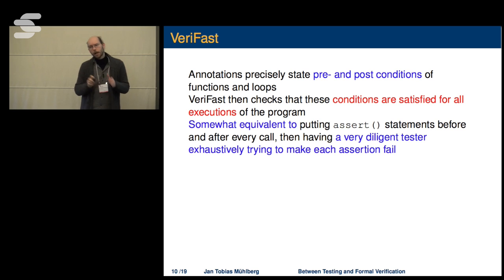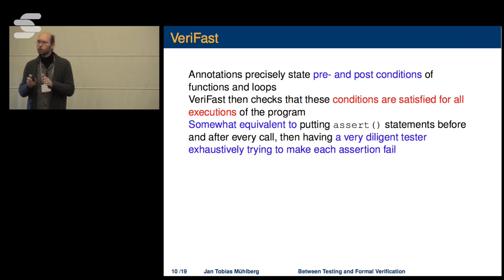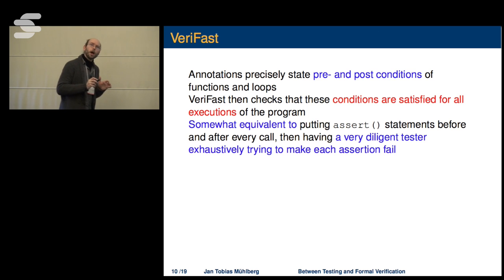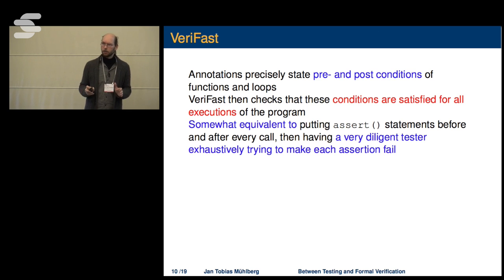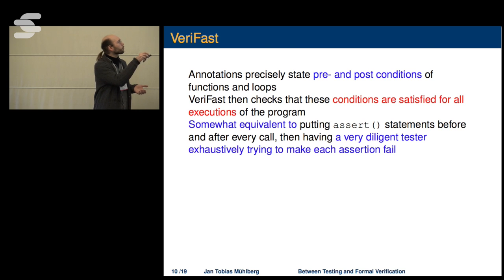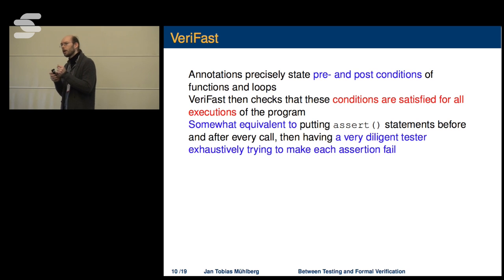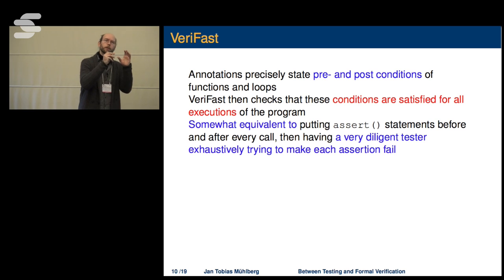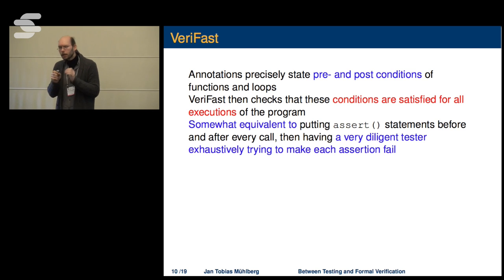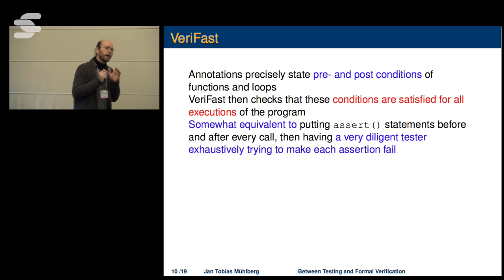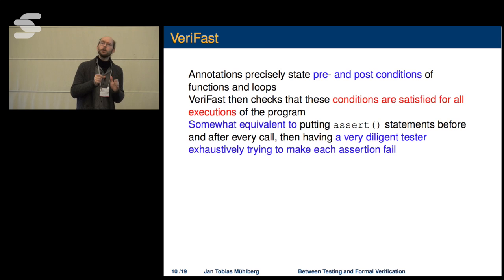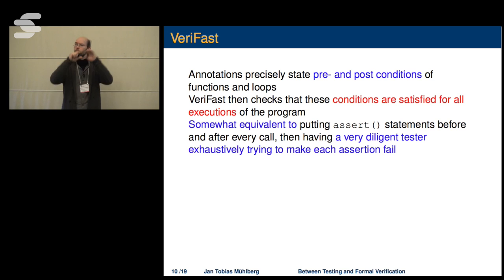However, what you specify and the verification results you get say something about all execution paths of the program — you're not talking about a single test case anymore, but about all execution paths the program may ever take. You could think of it as a very skilled and diligent tester writing assert statements explicitly in front of every function call, and then trying diligently — without missing a single bit flip — to make each of those assertions fail individually. If you go through this process and get a green bar, there is for all execution paths no way to make those assertions fail.